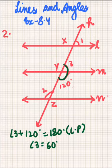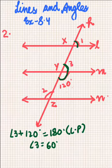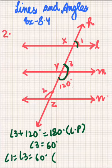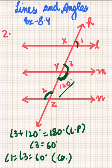Now Angle 3 and Angle 1 are corresponding angles because these lines are intersected by a transversal and these lines are parallel to each other. So these are corresponding angles. Now this angle 120 degrees and Angle 2 are alternate interior angles. Since these are alternate interior angles, they are equal.